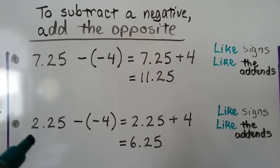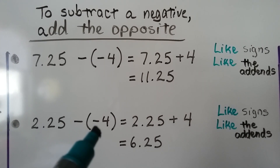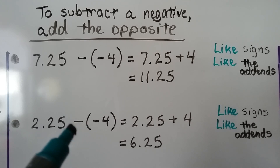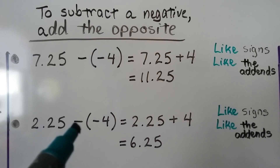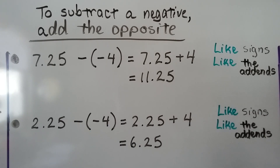For 2.25 minus a negative 4, this becomes an addition sign — we're going to add. And the opposite of negative 4 is positive 4. So we have 2.25 plus 4. That's 6.25.